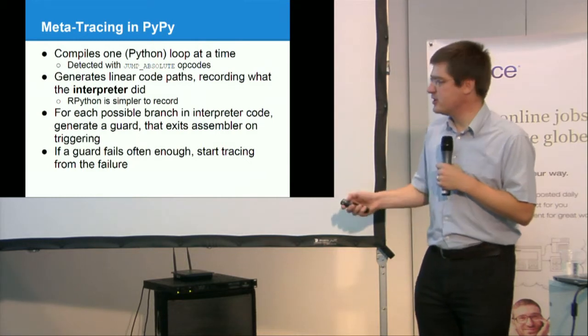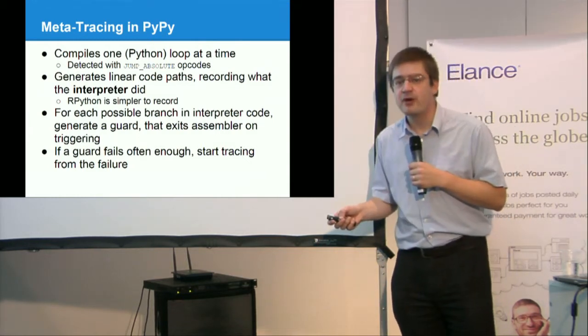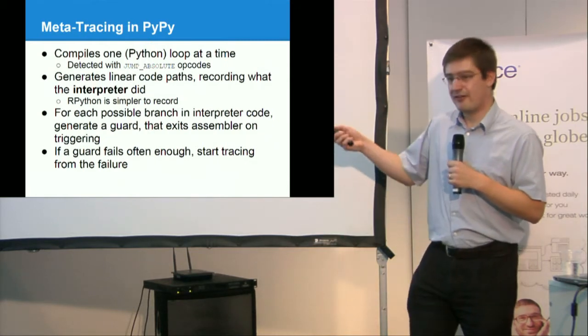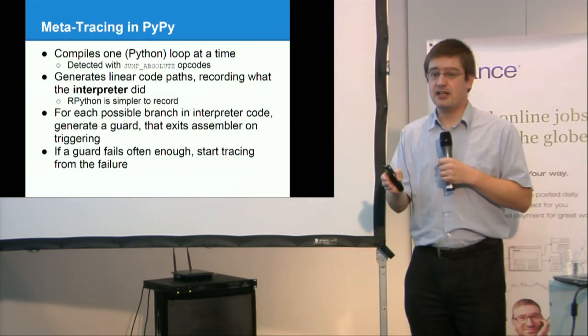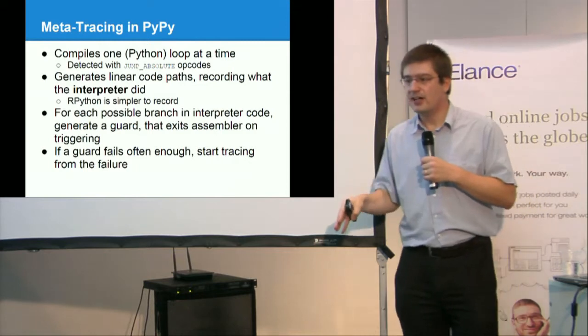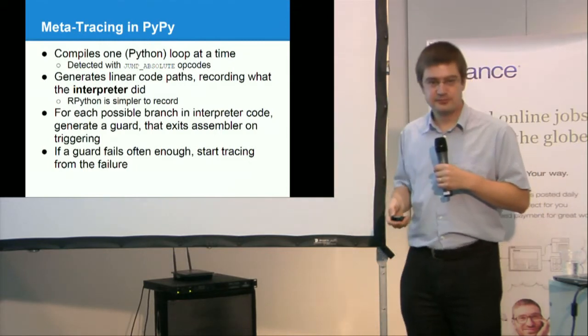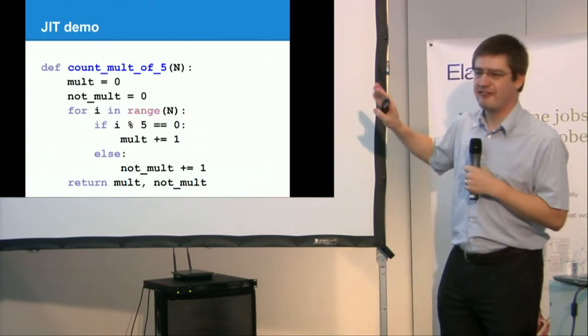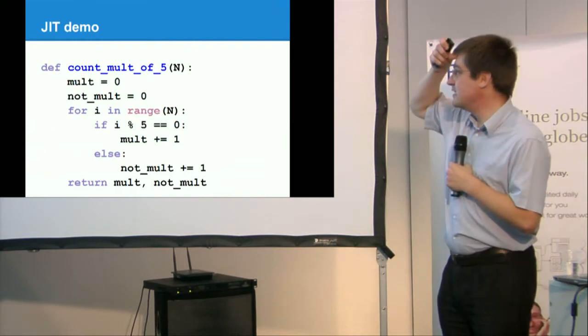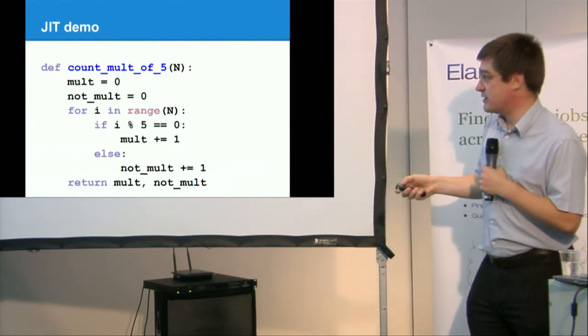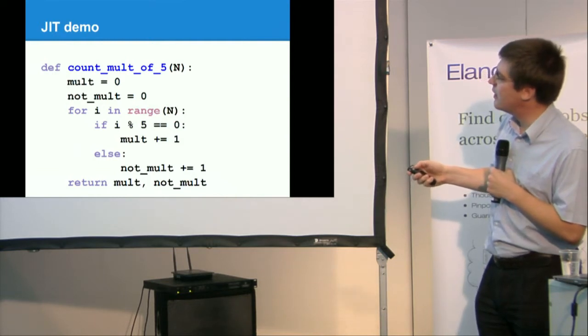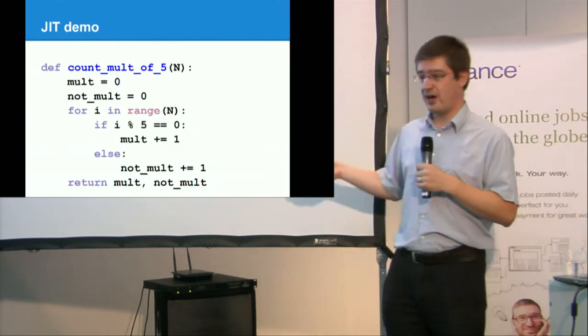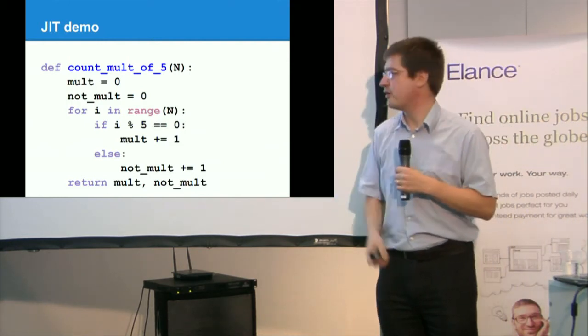And then there is some optimization. If a guard fails often, that's probably that we have something interesting to look at. And we will enter tracing from this failure again. Typically, if your function has two common paths, I want machine code to be generated for both paths. It's a demo. It's a very static demo. So let's see a simple function. It's a simple loop.